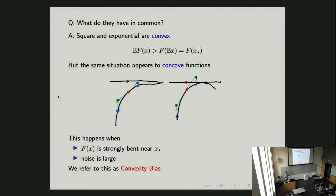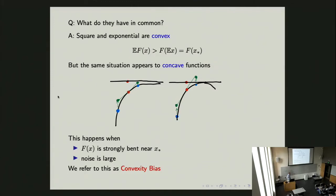So this phenomenon is what I call convexity bias. Why 'convexity' and not 'concavity'? The reason is we always talk about convex analysis in the literature — we never say concave analysis — so we just pick one word. In fact, this is not just about convex functions; it's about all functions that are quite bendy. This talk is about correcting this so-called convexity bias for a fairly general family of functions f(x), where I'm given a single sample or a bunch of samples of the ground truth and trying to estimate f(x-star).